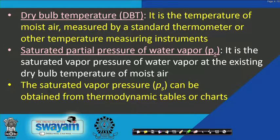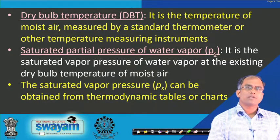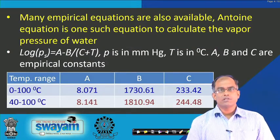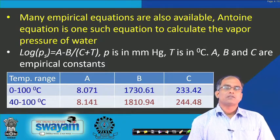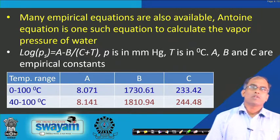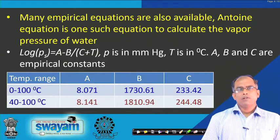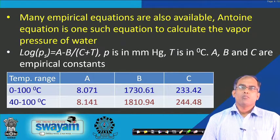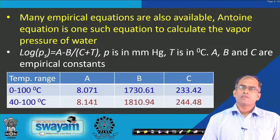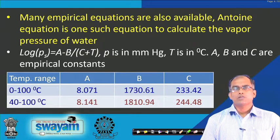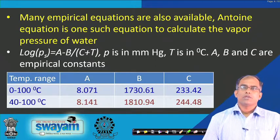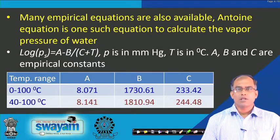The saturated vapour pressure P_s can be obtained from thermodynamic tables or charts available in any thermodynamics textbook, or it can be calculated using empirical equations. The Antoine equation is one such equation: log(P_s) = A − B/(C + T), where P_s is in mmHg, T is in degrees centigrade, and A, B, C are empirical constants.